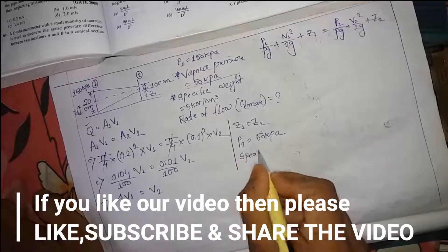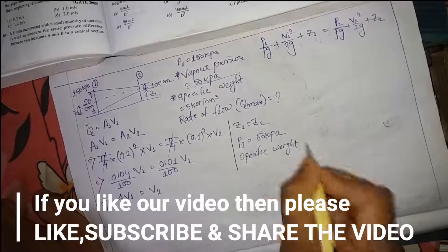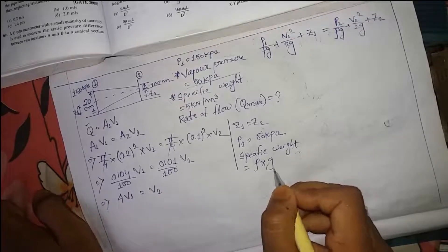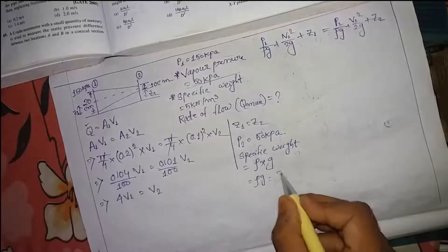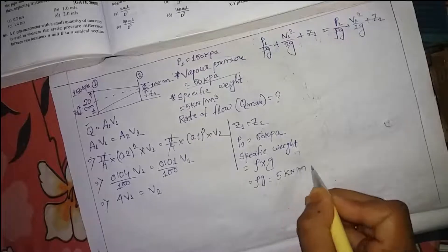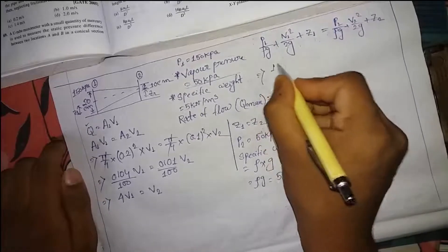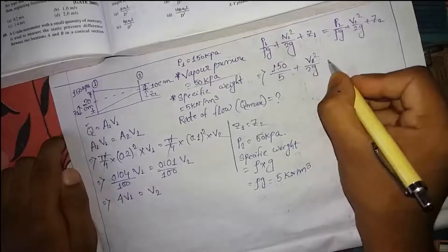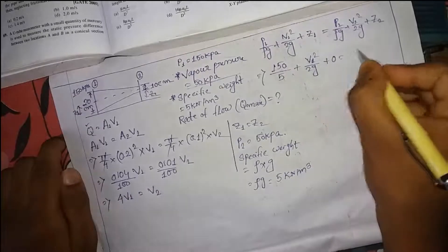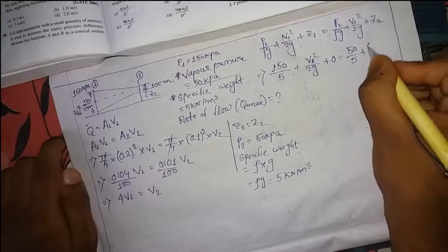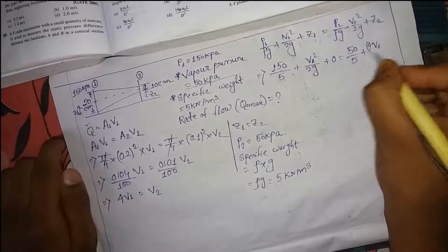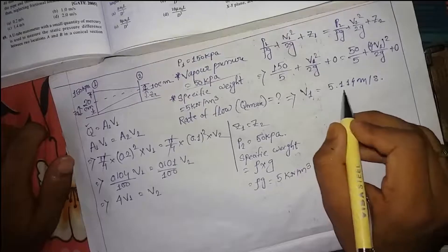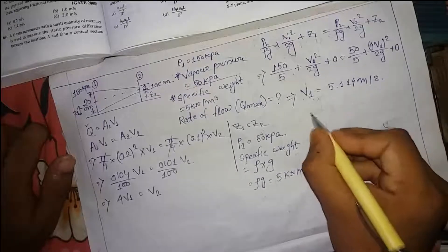Specific weight is the product of density and gravitational acceleration: ρg = 5 kN/m³. Now substituting into Bernoulli's equation: 150/5 + v1²/2g + 0 = 50/5 + (4v1)²/2g + 0. Solving this gives v1 = 5.114 m/s.